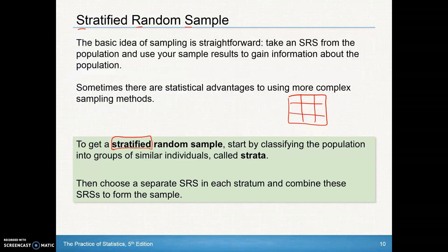Then you choose a separate SRS from each stratum — you do an SRS here, here, here, and everywhere you've divided your group into different strata. You do an SRS from each stratum and then combine those SRS's to form the overall sample. So out of each group you take a little sample — say 10 out of each — giving you a total of 90 taken overall. That's a stratified random sample.